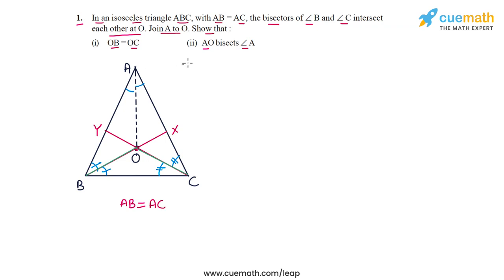Let's start with part one: we have to show that OB is equal to OC. OB will equal OC if the angles opposite these two sides are equal. The angle opposite OB is angle OCB, and the angle opposite OC is angle OBC. The question is: are these two angles equal?